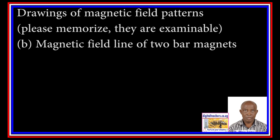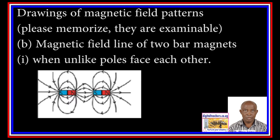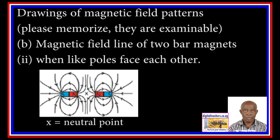Magnetic field lines of two bar magnets. When unlike poles face each other, there is a region X called a neutral point, where a magnetic force is not experienced.